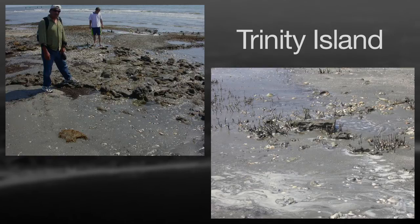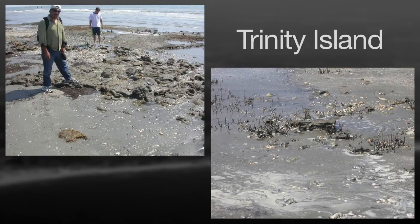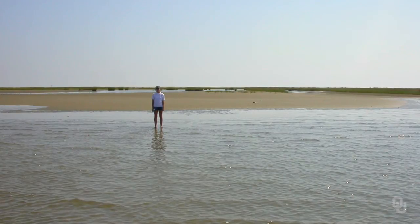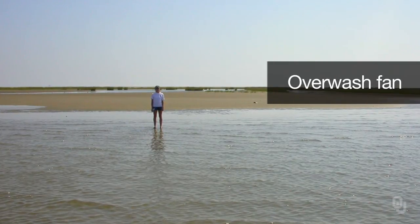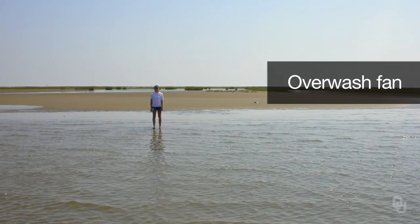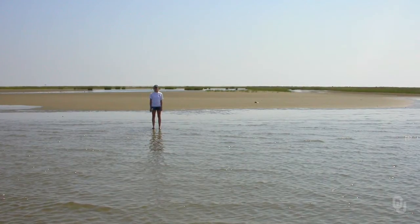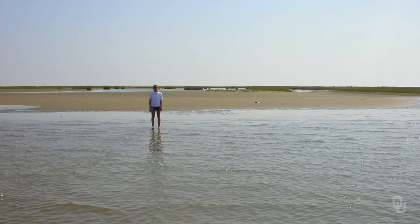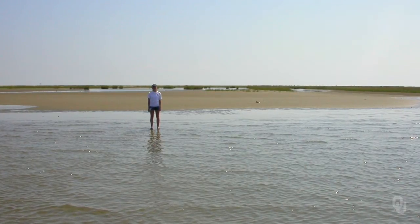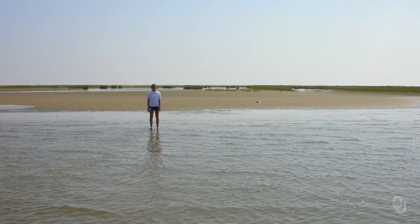At one point in time, in that upper photograph, the barrier island was out where the waves are breaking right now, but the whole island has moved landward. And this is a picture of an overwash fan on Trinity Island. The island is in the background, and that lobe of sand came from the beach and was deposited on the back part of the barrier island — an overwash fan. And there's a student for scale.